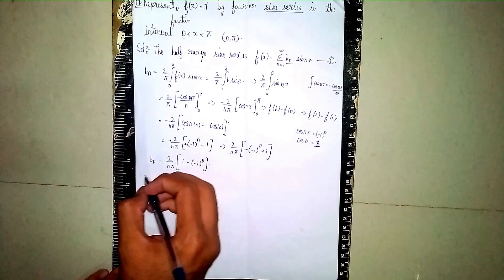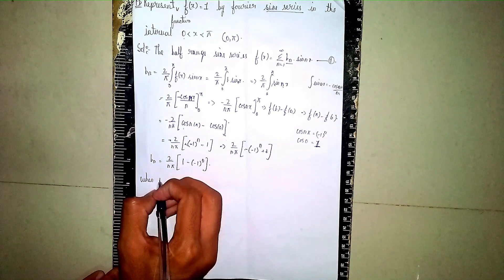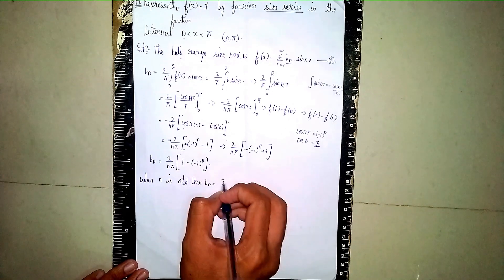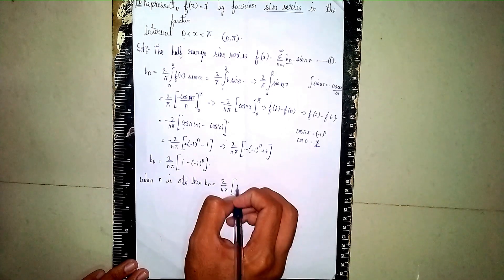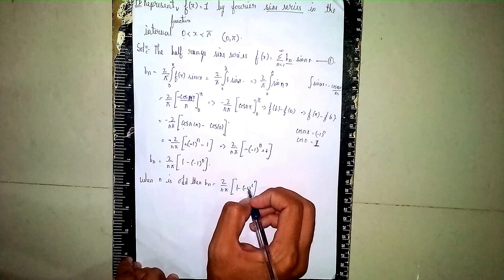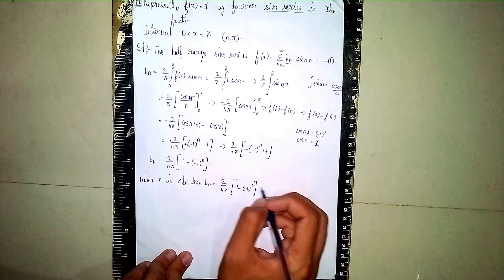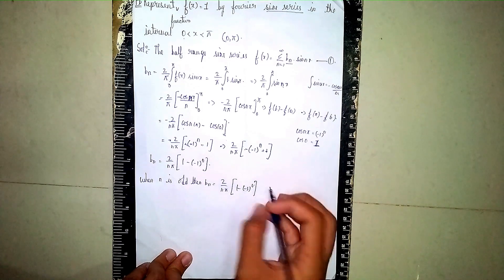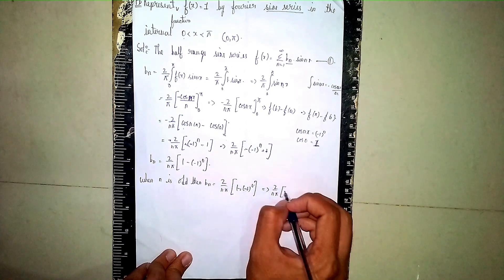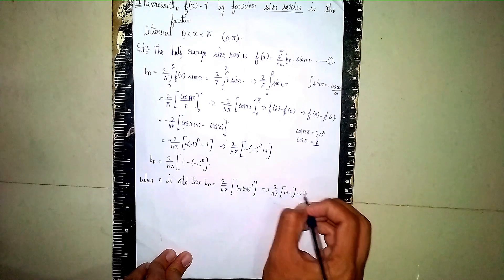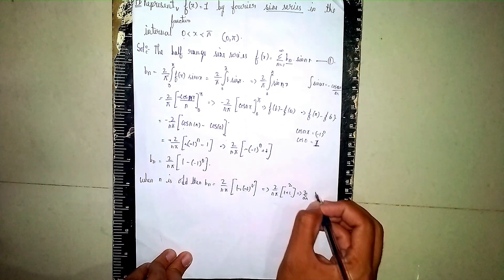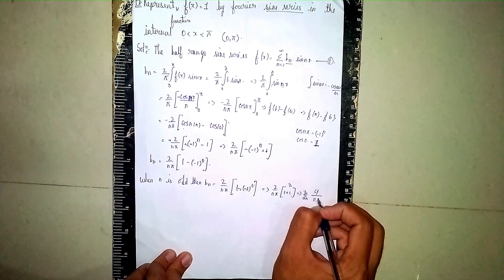Now when we get (-1)^n in the b_n value, we check even and odd cases. When n is odd: substitute n=1, so (-1)^1 = -1. It becomes (2/nπ)[1 - (-1)] = (2/nπ)(1+1) = (2/nπ)(2) = 4/(nπ). So b_n = 4/(nπ) when n is odd.